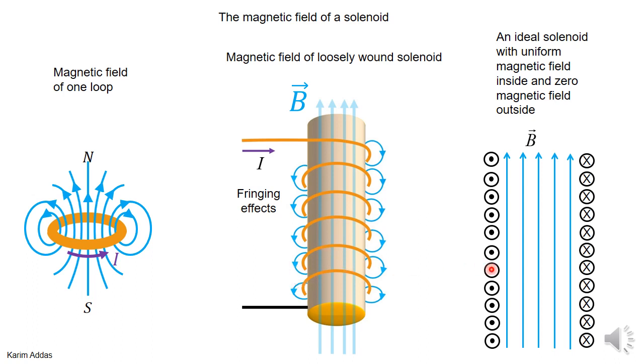So the case of an ideal solenoid is when you make the spacing between the loops very very small, so that you can get rid of the fringing, neglect the fringing as much as possible. And the magnetic field inside then would be completely uniform. That's the limit that we're going to take in this particular problem.